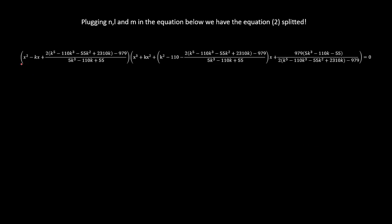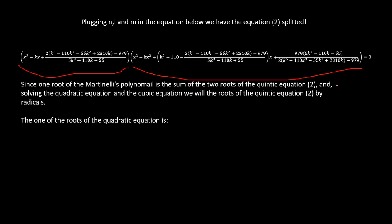Plugging N, L, and M into equation 2, we have the equation split. This equation has been cracked. Equation 2 has been cracked when we split it into a degree 2 and a degree 3 equation. Since one of the roots of Martinelli's polynomial is the sum of two roots of the quintic equation 2, and solving the quadratic equation and the cubic equation, we will have the roots of the quintic equation by radicals.